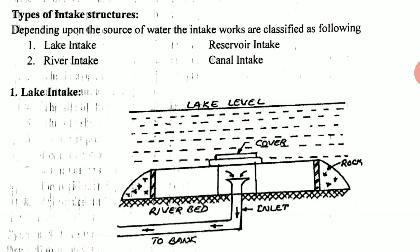Seventh, as far as possible, the intake should not be located in the vicinity of the point of sewage disposal to avoid pollution of water. If there is sewage disposal near the water intake structure or location, heavy pollution can be expected. That's why we have to avoid these locations for intake structures. Eighth, at the site, sufficient quantity should be available for the future expansion of the water works. The quantity of water should be available at all times, so future expansion projects will be successful.